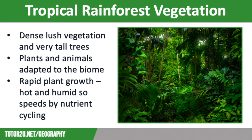Linked to the climate is the vegetation found in the tropical rainforest biome. Tropical rainforests have dense lush vegetation and very tall trees. Plants in the rainforest have specific adaptations that enable them to compete for sunlight and nutrients and survive in the warm and wet conditions. Plant growth is rapid because the hot and humid conditions speed up the nutrient cycle, making ideal conditions for plants. The canopy also receives plenty of sunlight to absorb at photosynthesis, which is why the vegetation is so dense in this layer.